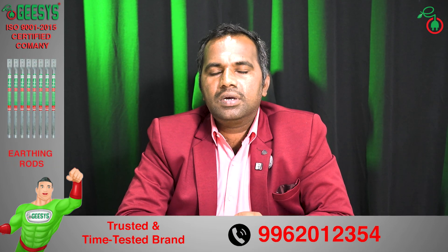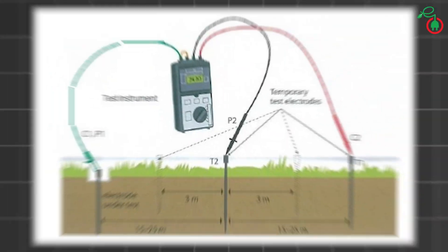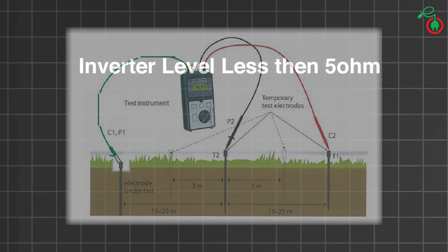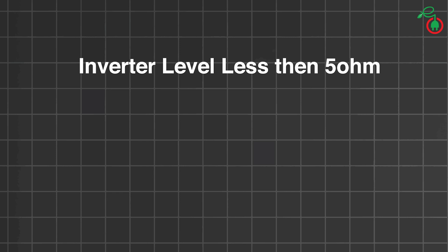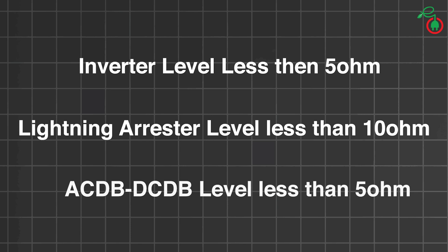When it comes to target resistance values: at the equipment level and inverter level, you should have less than 5 ohms; at the lightning arrester level, you should have less than 10 ohms; and at the ACDB, DCDB, and other equipment, you should have less than 5 ohms. Lower the resistance value, the better the dissipation of fault current.